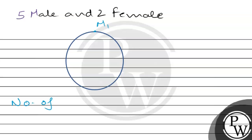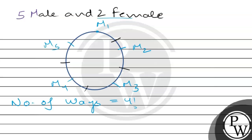We arrange the 4 males around the round table, which gives us 4 factorial arrangements. With 4 males seated, we have gaps between them. Counting the positions: 1, 2, 3, 4, and 5 — there are 5 available positions between the males where the 2 females can be placed so that they are not adjacent to each other.